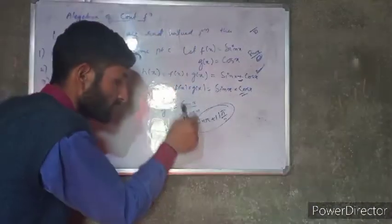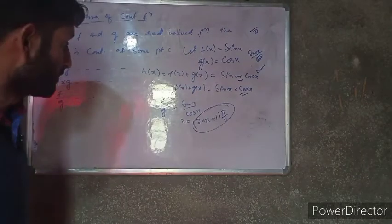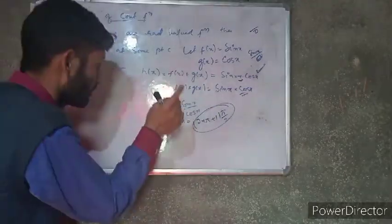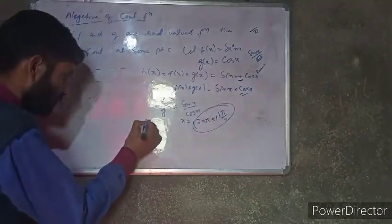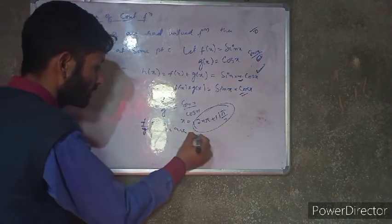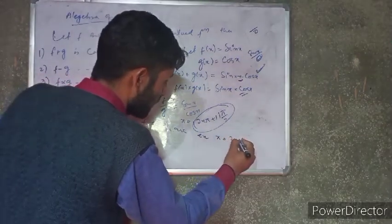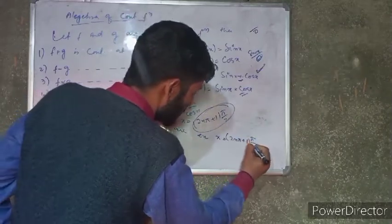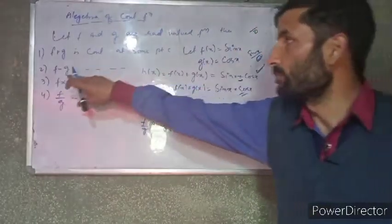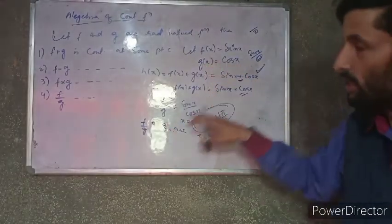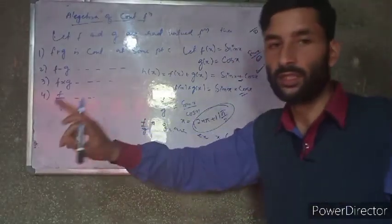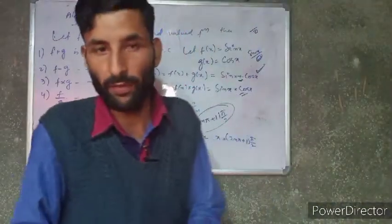If there is a continuous function, what is the answer? The meaning of f and g being continuous functions means f plus g and f minus g are continuous. But f divided by g is continuous except when x equals (2n+1)π/2. f into g is continuous, but f divided by g is not defined at r multiples of π/2.